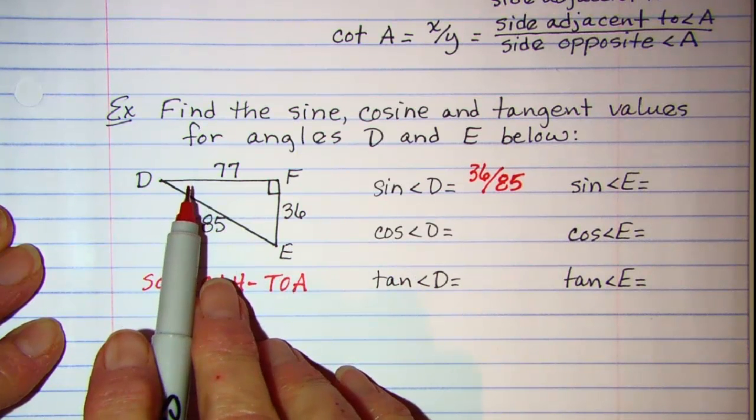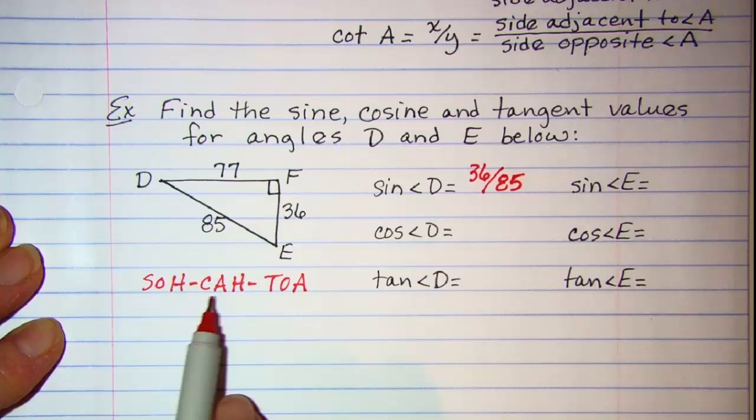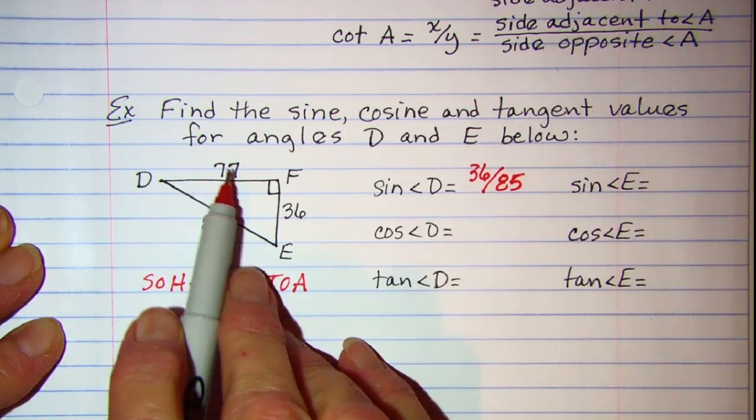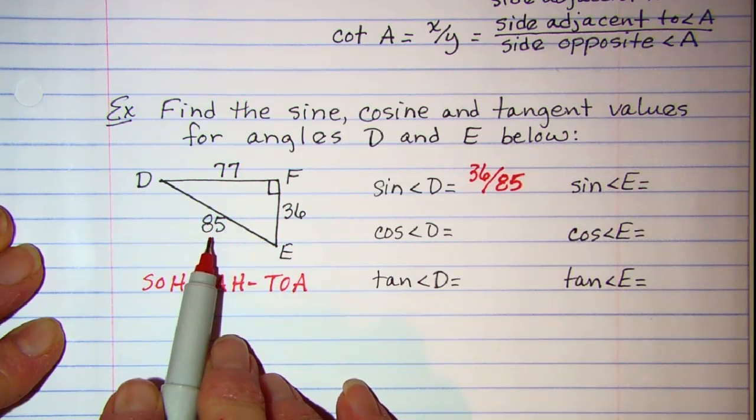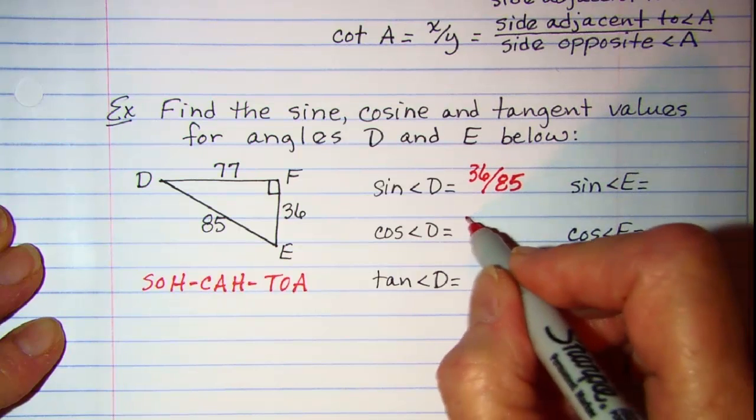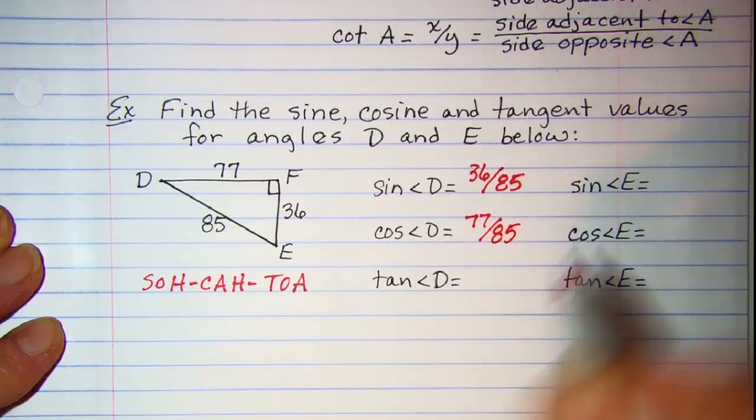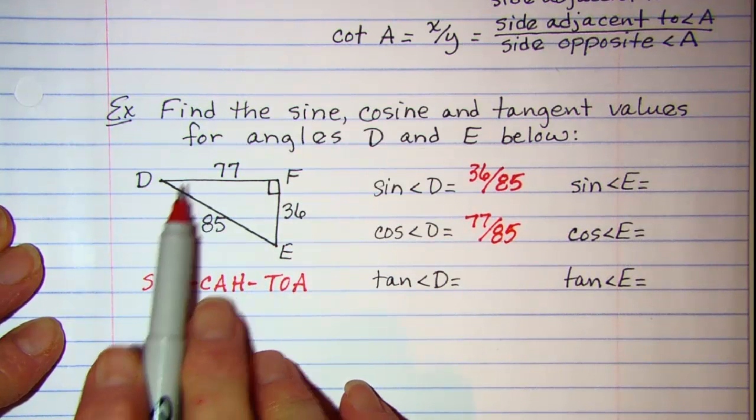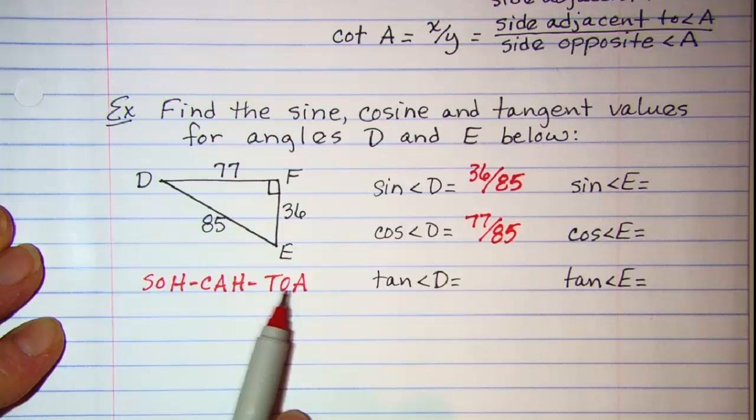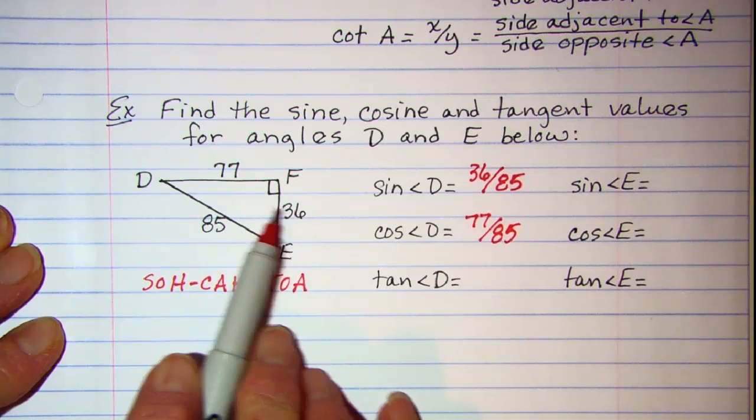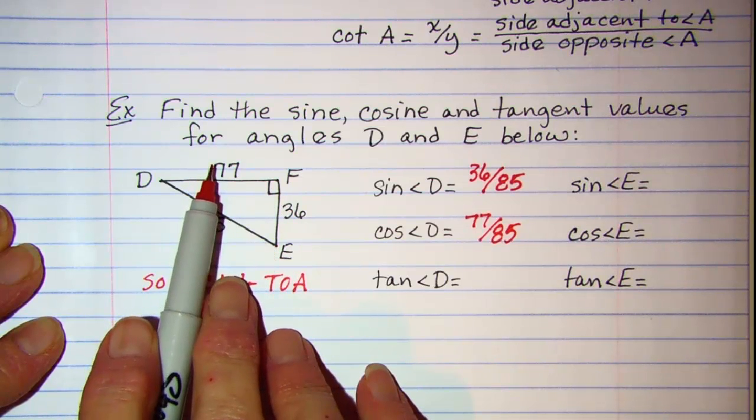So let's continue down with angle D. My cosine of angle D, I need the adjacent over hypotenuse. So my adjacent side is the 77 over the hypotenuse which is 85. And then for my tangent of angle D, I need the opposite over the adjacent. So sitting in angle D, opposite is 36, adjacent is 77.